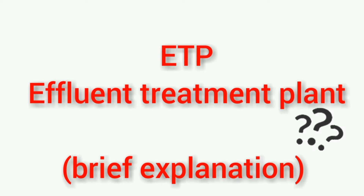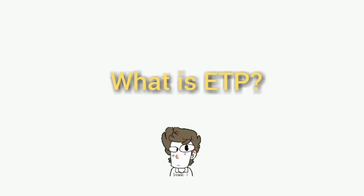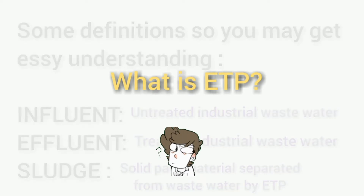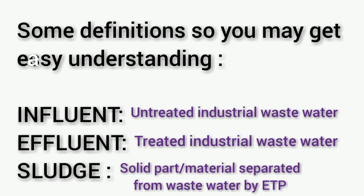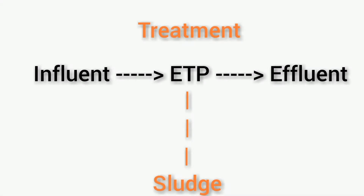Hello everyone. In this video I will explain about the effluent treatment plant in a brief explanation. First, let me introduce some definitions: influent is untreated industrial wastewater, effluent is treated industrial wastewater, and sludge is the solid part material separated from wastewater by the ETP.